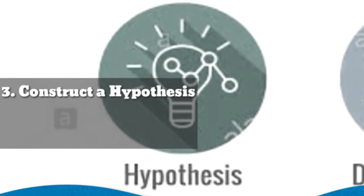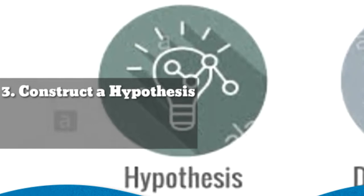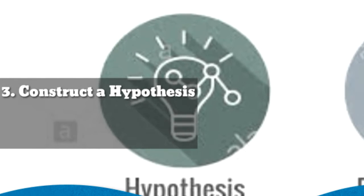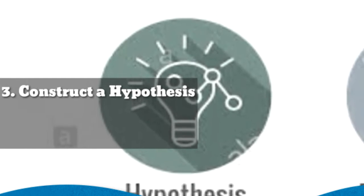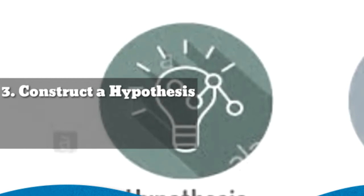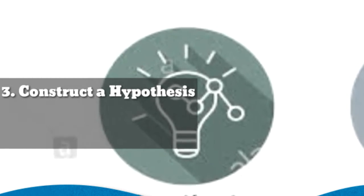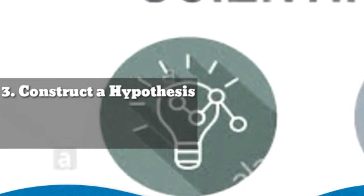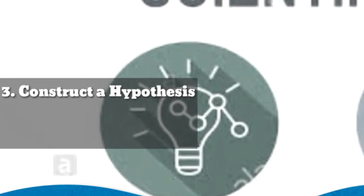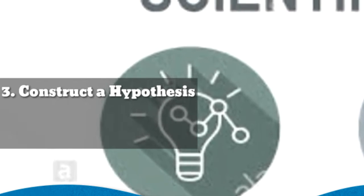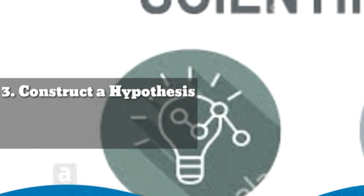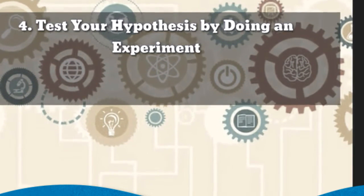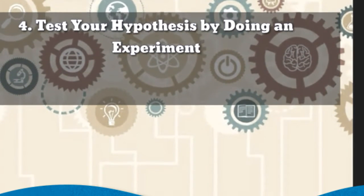The third step of the Scientific Method is to construct a hypothesis. A hypothesis is an educated guess about how things work. It is an attempt to answer your question with an explanation that can be tested. A good hypothesis allows you to then make a prediction. Create both your hypothesis and the resulting prediction you will be testing. Predictions must be easy to measure.